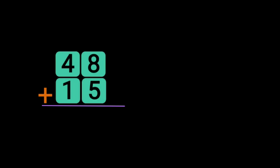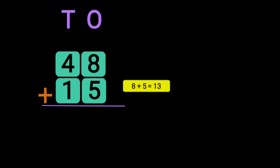Here we have the example of two two-digit numbers: 48 plus 15. First, write down the place values — 1's and 10's. Begin the addition from the 1's place. 8 plus 5 will give you 13. So, we have 13 1's.